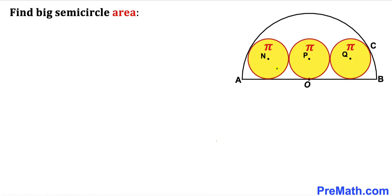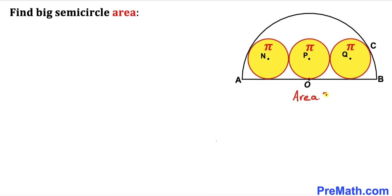Welcome to pre-math. In this video we have three identical circles fully inscribed in a semi-circle with center O. The centers of these identical circles are N, P and Q. The area of each of these circles is π centimeter square, and our task is to calculate the area of this big semi-circle.